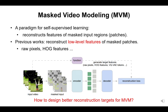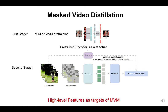So in this paper, we study how to design better reconstruction targets for masked video modeling. We find that using high-level features of pre-trained models as targets can help models learn stronger representations and achieve much better performance on downstream tasks. Based on this observation, we propose Masked Video Distillation, a two-stage masked video modeling framework where we first pre-train models by masked image modeling or masked video modeling, and use them as teachers to provide high-level target features for a student model in the second stage.